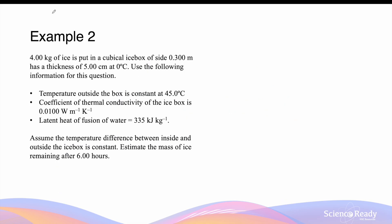Let's look at a more complicated example. We have a 4 kilogram sample of ice put into a cubical ice box of side length 0.3 meter, with a wall thickness of 5 centimeters. The ice box has a temperature of 0 degrees Celsius inside, and the temperature outside is constant at 45 degrees Celsius. The thermal conductivity constant K for the ice box material is 0.01 watts per meter per kelvin. The latent heat of fusion of water — how much energy it takes to melt a kilogram of ice — is 335 kilojoules per kilogram. Assume the temperature difference between inside and outside is constant. Estimate the mass of ice remaining after 6 hours.